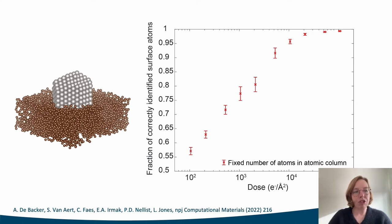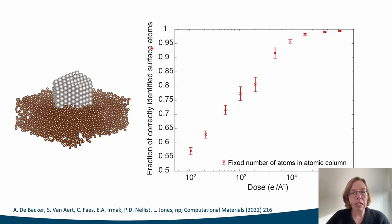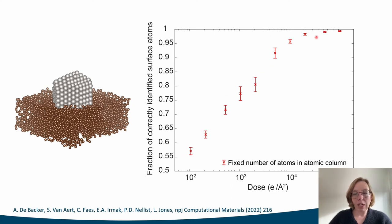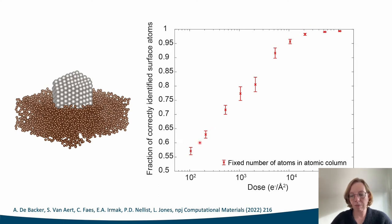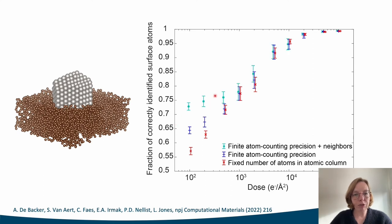We applied this Bayesian genetic algorithm to 13 noise realizations for different noise levels and evaluated the fraction of surface atoms correctly identified in three dimensions for a simulated platinum nanoparticle. Surface atoms are most important for catalysis. The results show an expected decrease when reducing the electron dose without prior knowledge. If we include prior knowledge from finite atom counting precision, or from both finite atom counting precision and neighbor mass relations, we can clearly observe the improved performance at low doses.